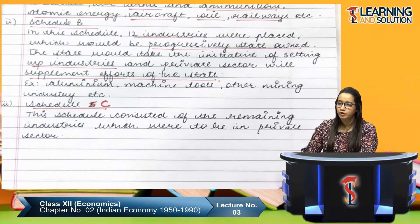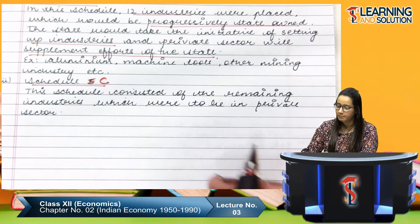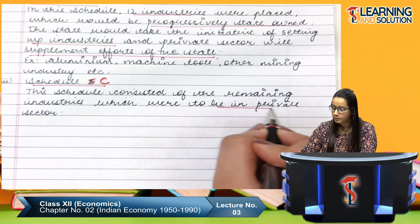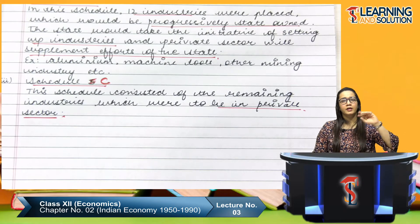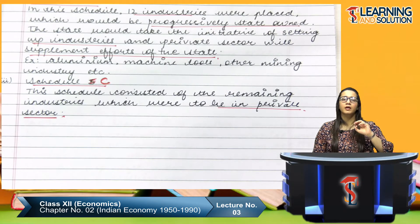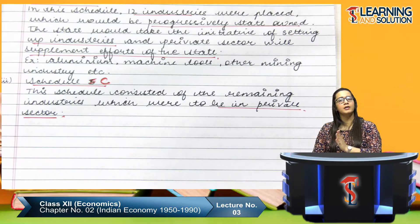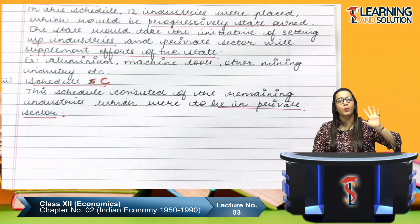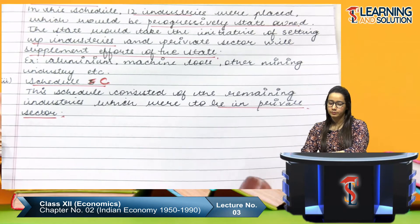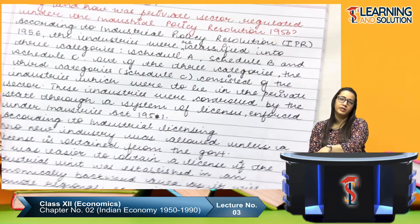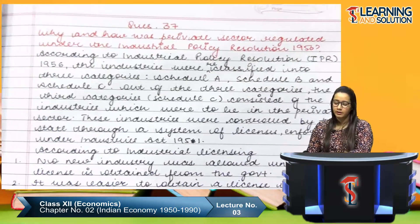Schedule C consisted of the remaining industries which were to be in the private sector. So Schedule A was exclusively public sector, Schedule B was a joint effort of public and private sector, and Schedule C was exclusively private sector. Apart from the 17 industries in Schedule A and the 12 in Schedule B, the remaining industries were held by the private sector. This was the classification as per Industrial Policy 1956.